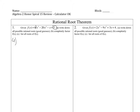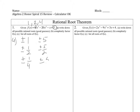That's going to be factors of my last number, so that's plus or minus 1 and plus or minus 5. I've got to divide each of those factors by the factors of the first number, so that's 1, 2, and 4. I already divided those both by 1, but I've also got to include plus or minus 1 half, plus or minus 5 halves, plus or minus 1 fourth, and plus or minus 5 fourths. That's my list of all possible rational roots.